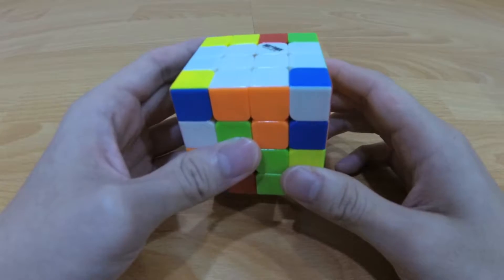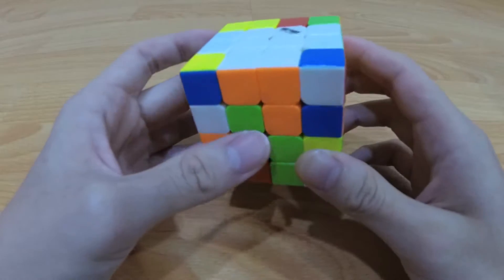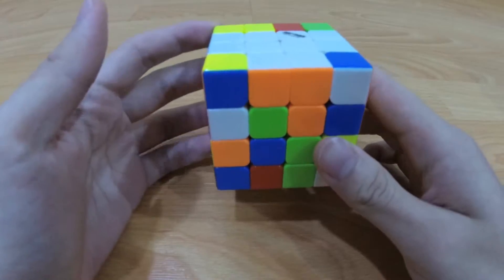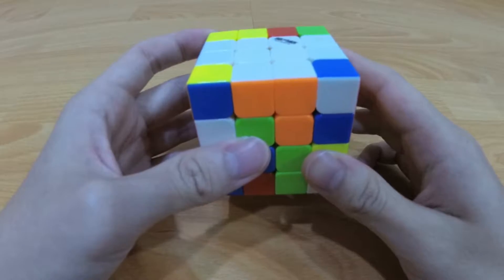Next up, first three cross edges. On Yao, you have to be quick on this step. It's very hard to find pieces at first but once you practice a lot, you'll eventually find them quickly. So here's an example.